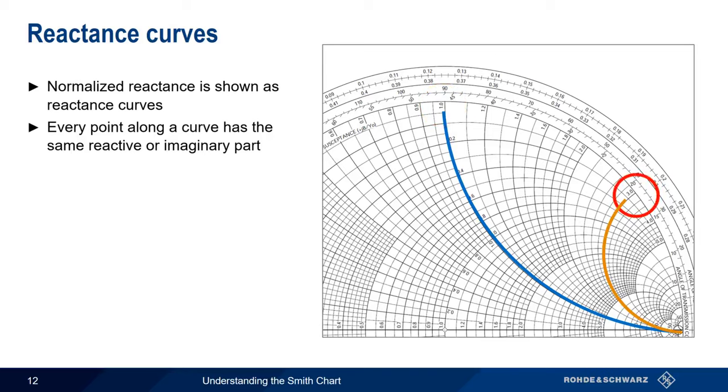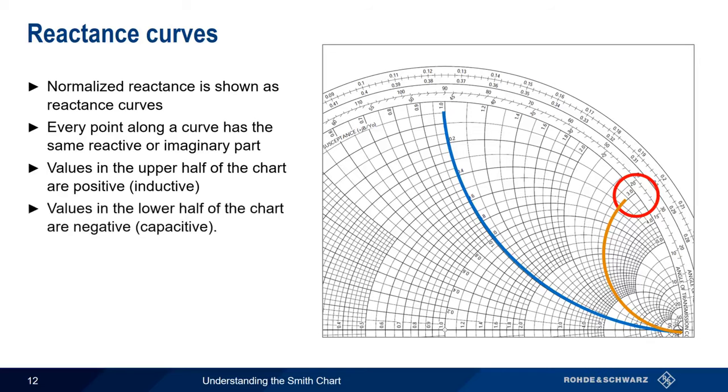We're looking at the upper half of the Smith Chart here, so all values of reactance are positive. If we're in the lower half of the Smith Chart, then all values of reactance are negative.